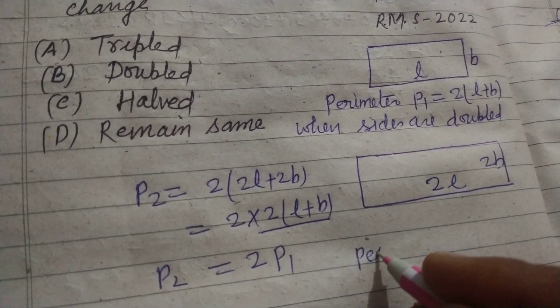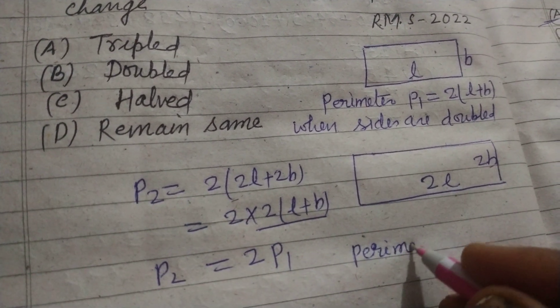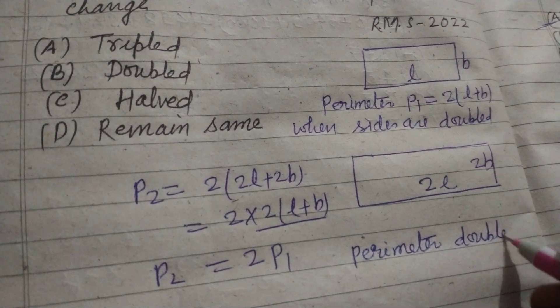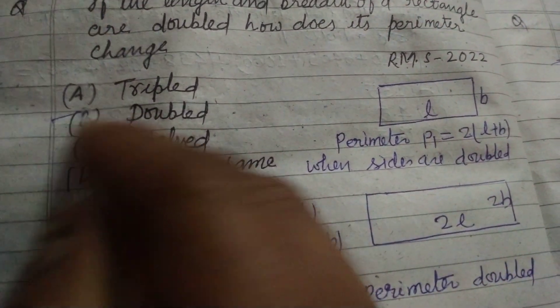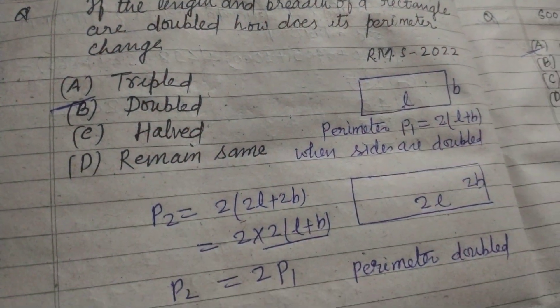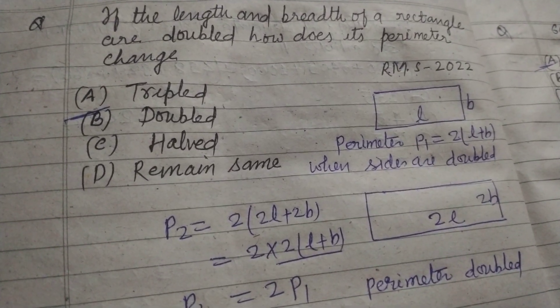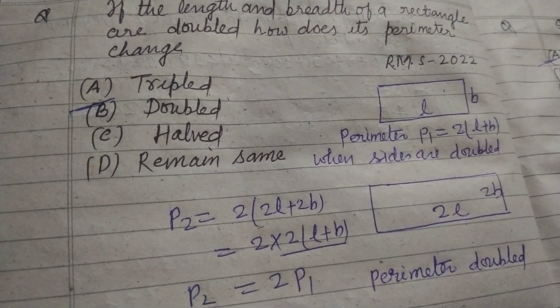It means perimeter doubled. So the answer to this question is option B. If the length and breadth of a rectangle are doubled, then its perimeter is also doubled.